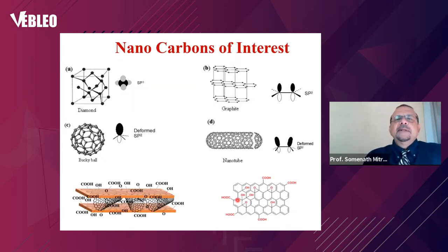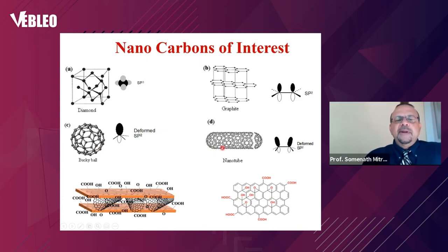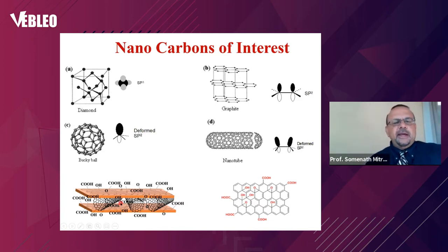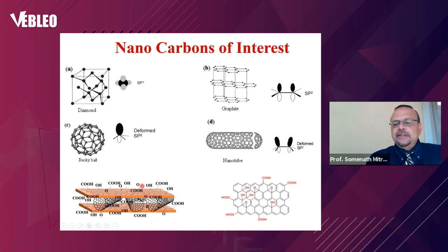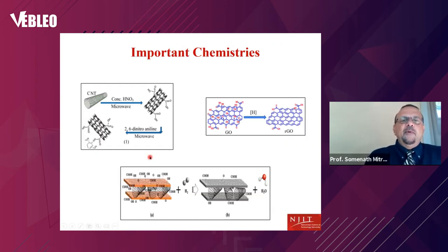We are talking about nanocarbons — materials like nanodiamond, graphite-type materials, buckyballs, carbon nanotubes, and graphene oxide. We also have a new material that I want to highlight: graphene layers with carbon nanotubes in between. Most of the membranes I'll discuss include carbon nanotubes, graphene oxide, and this carbon nanotube–graphene oxide hybrid. The main focus for this talk is water purification.